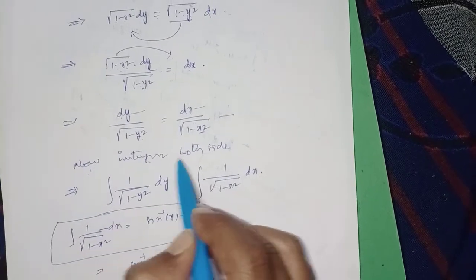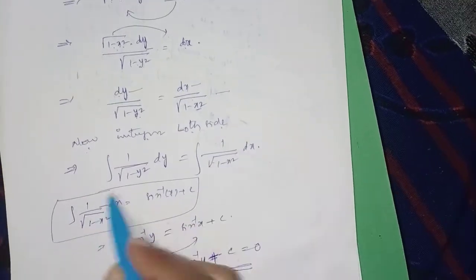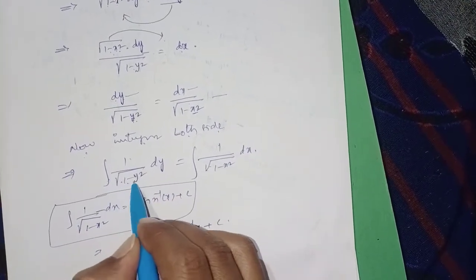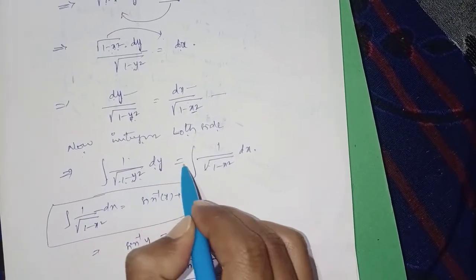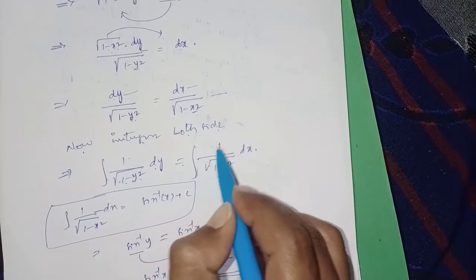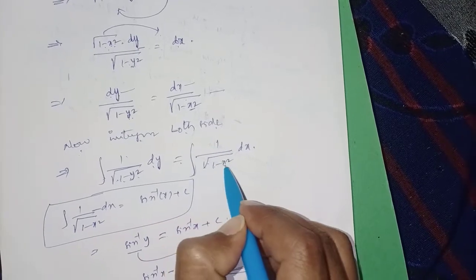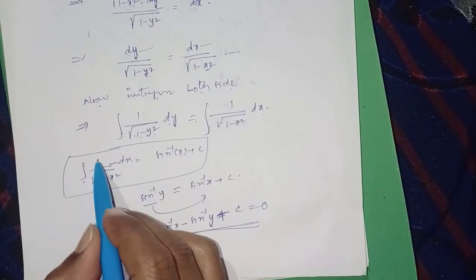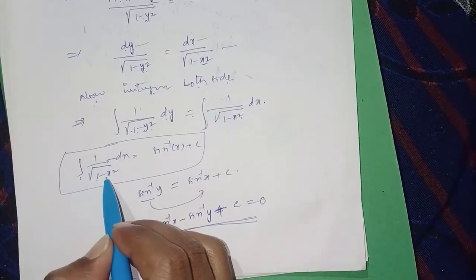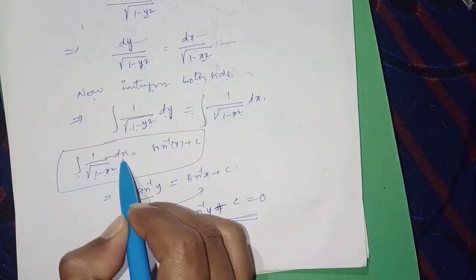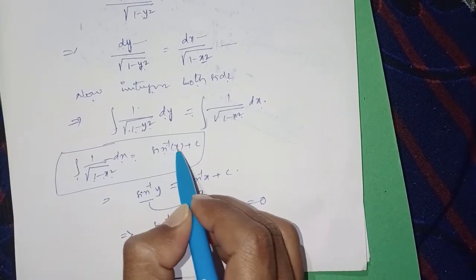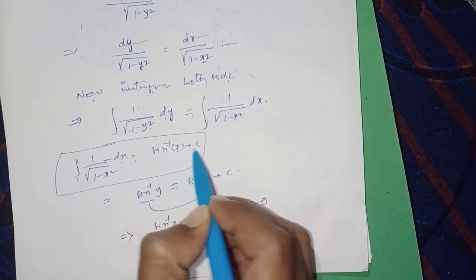Now integrate both sides. Integral of 1 by under root (1 minus y square) dy equals integral of 1 by under root (1 minus x square) dx. The formula is: integral of 1 by under root (1 minus x square) dx equals sin inverse of x plus c.